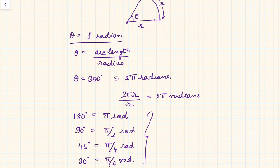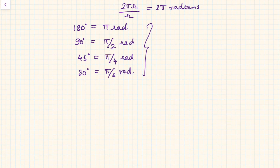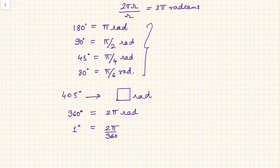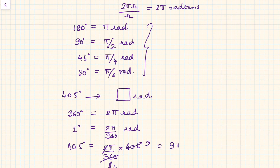Let us take an example of converting degrees into radians. Say we have 405 degrees to convert into radians. Since 360 degrees equals 2π radians, one degree equals 2π/360 radians. So 405 degrees equals (2π/360) × 405. Here, 360 divided by 45 is 8, and 405 divided by 45 is 9, so the answer is 9π/4 radians.